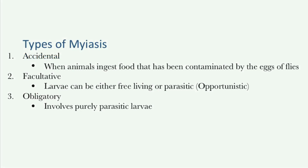There are three main types of myiasis: accidental, facultative, and obligatory. Accidental myiasis refers to when animals ingest food that has been contaminated by the eggs or flies; although the fly species is typically non-parasitic, it can be in order to survive. Facultative myiasis involves larvae which can either be free-living or parasitic, and are typically seen as opportunistic — they can develop in both carrion or living tissue. Obligatory myiasis involves purely parasitic larvae.